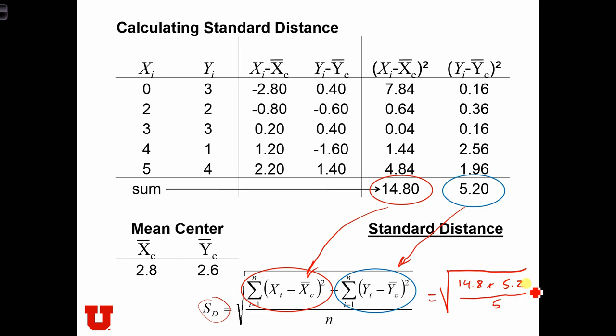14.8 plus 5.2 is 20. So we have the square root of 4 - that's 20 over 5 - and that equals 2. So the standard distance equals 2, Sd equals 2.